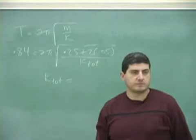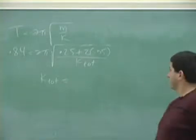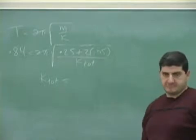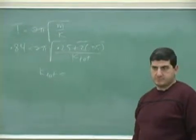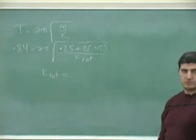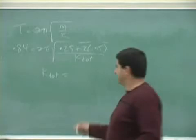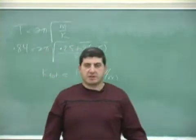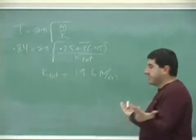20, right? Nineteen. Nineteen, yeah. And the reason it's not 20 is because we don't know if they're each the same K. We're just estimating here. So the idea is that it's close to 20.